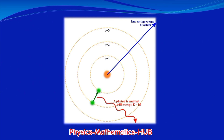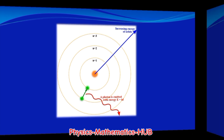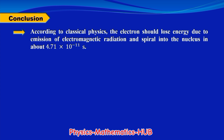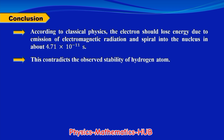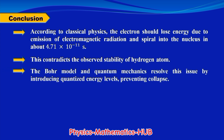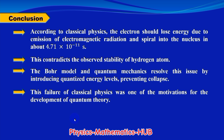Quantum mechanics solves this mystery. Instead of classical orbits, electrons exist in discrete energy levels. They can only jump between these levels by absorbing or emitting energy in fixed amounts called quanta. This means the electron doesn't continuously spiral inward — instead it stays in a stable orbit unless disturbed. This is why hydrogen and all other atoms are stable. The electron should lose energy due to electromagnetic radiation and spiral into the nucleus in about 4.71×10⁻¹¹ seconds — contradicting observed stability. The Bohr model and quantum mechanics resolve this by introducing quantized energy levels preventing collapse. This failure of classical physics was one of the key motivations for the development of quantum theory.